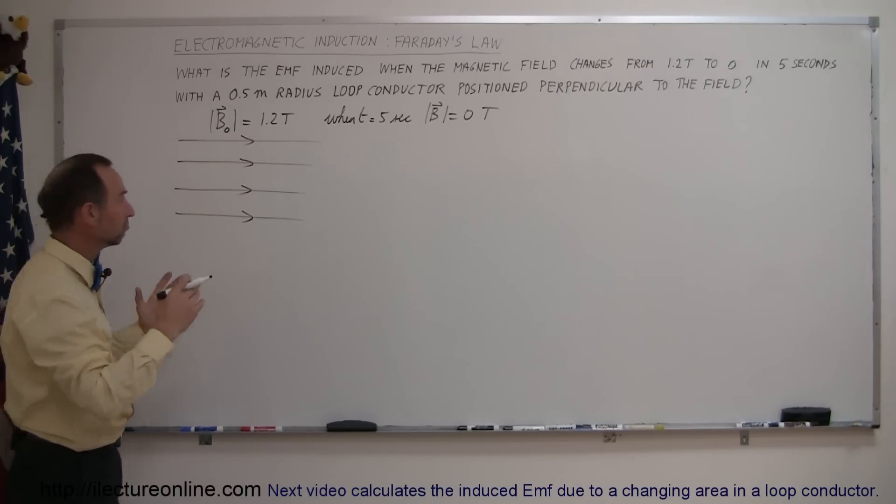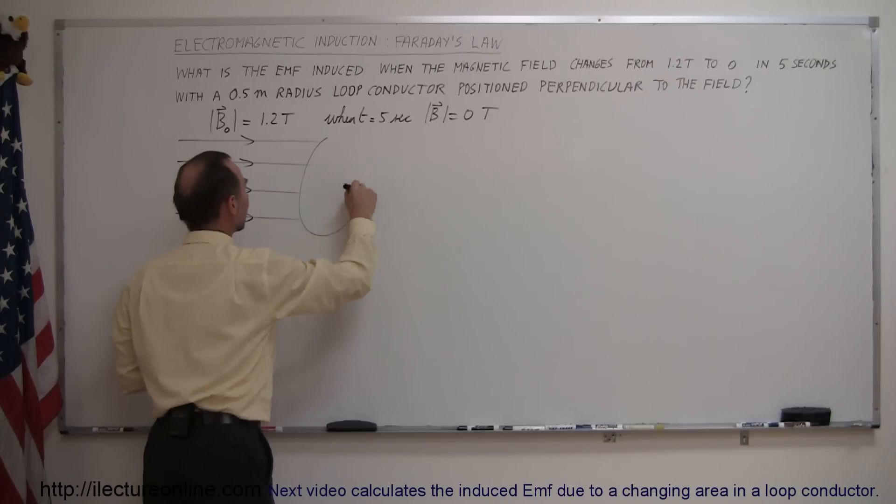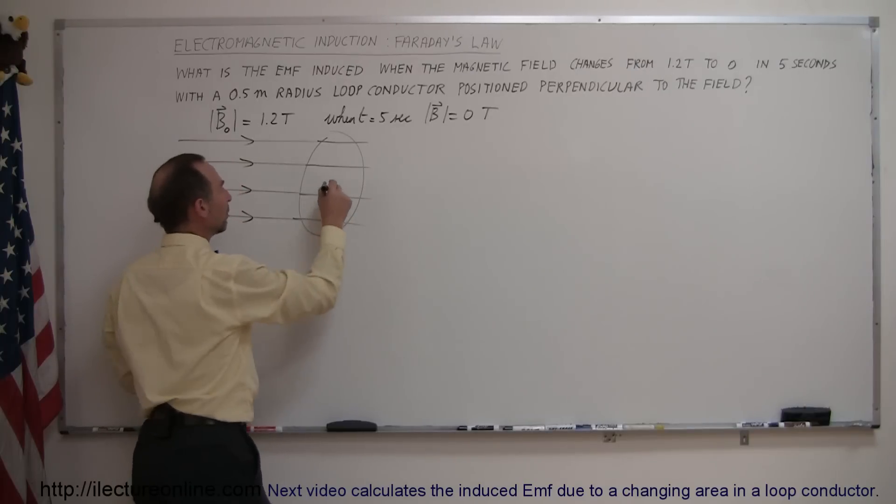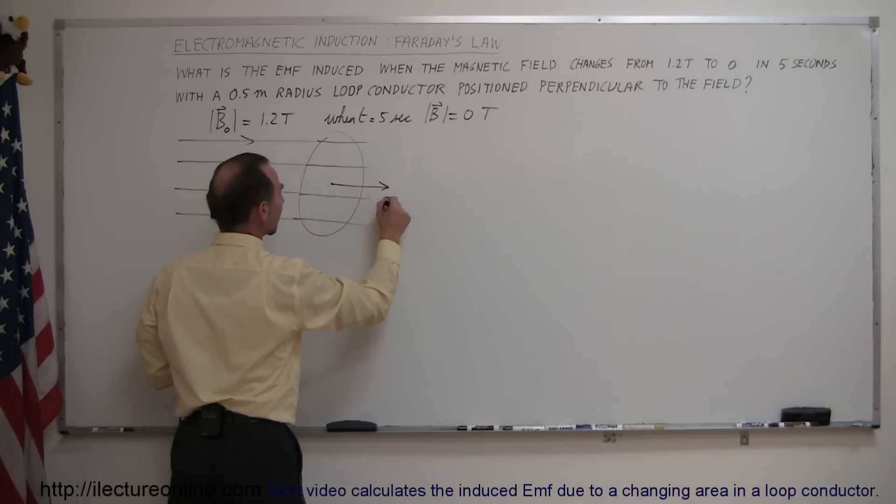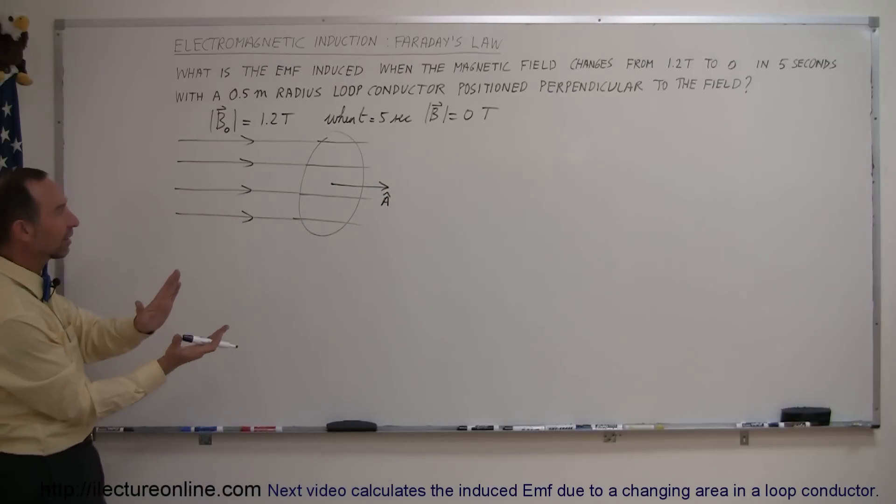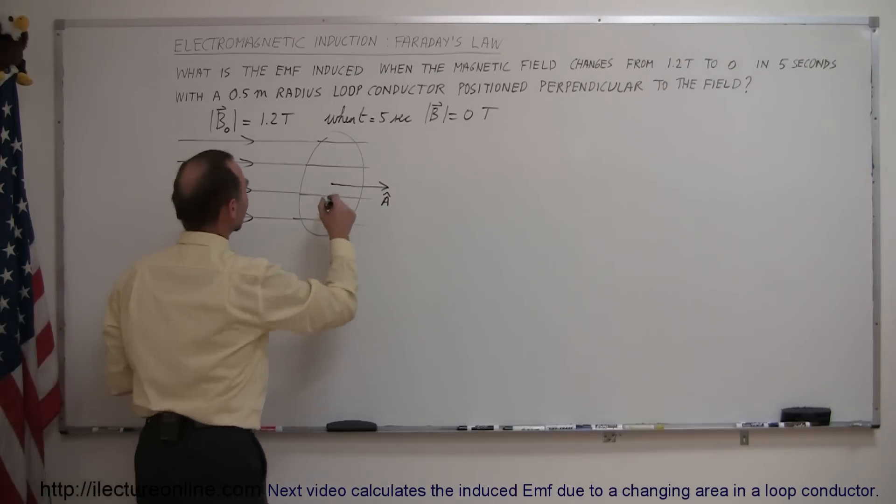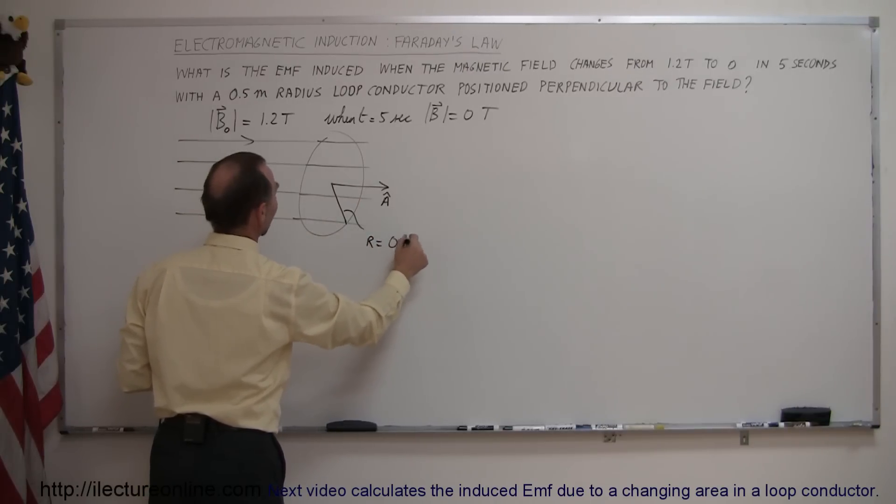Now we have a loop conductor and it's positioned perpendicular to the field. So here's a loop conductor so that the magnetic field can go through it and perpendicular means that the perpendicular vector to the loop is parallel to the B field which means that the plane of the loop is perpendicular to the B field. So the B field can go through the loop.